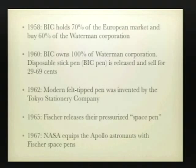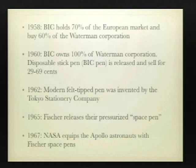1967: pens made it into space as part of the NASA project — before then it was grease pencils or pencils. We then had the early introduction of porous point pens, which most people refer to as drafting pens — things like Microns and those type of pens. 1979: a big development in the ink area — erasable pens came out. We also have developments such as the jelly pens and the Uniball 207, which is the first pen to prevent check washing. As you can see in this fragmented pen market, repeatable and measurable pen testing standards are even more important as things have just diverged so much.